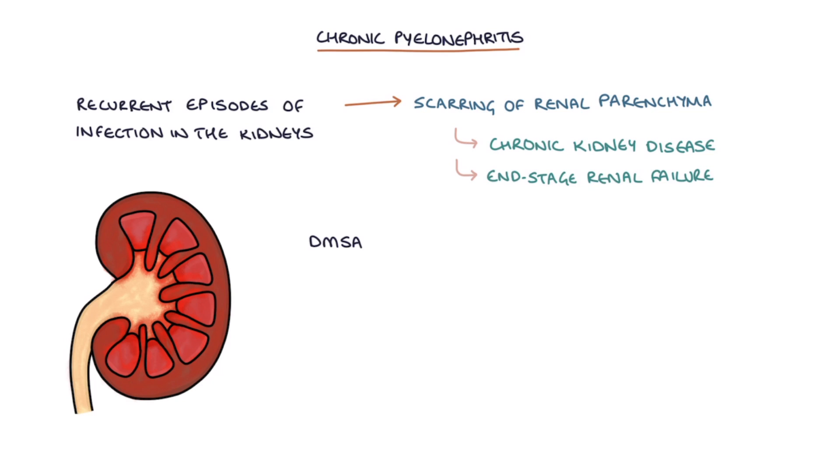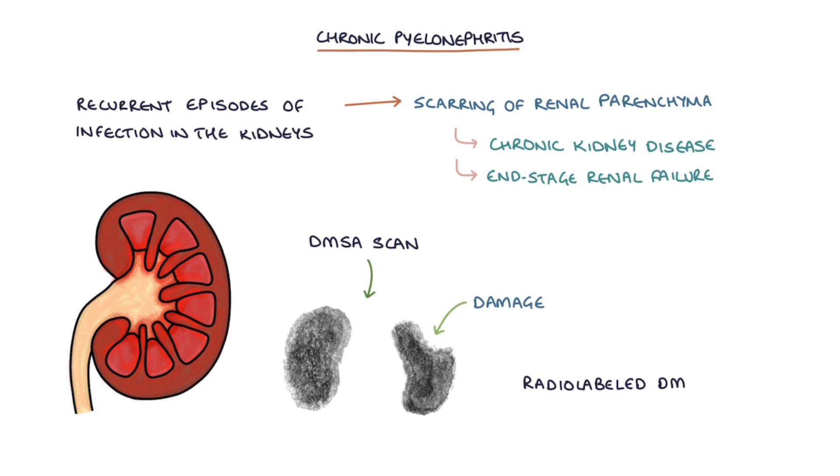A DMSA scan can be used to investigate for damage to the kidney after chronic pyelonephritis. This involves injecting radiolabeled DMSA which builds up in healthy kidney tissue. Gamma cameras are then used to image the kidneys and any areas that do not take up DMSA suggest damage or scarring which could be the result of the chronic pyelonephritis.